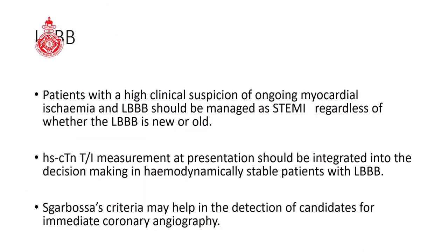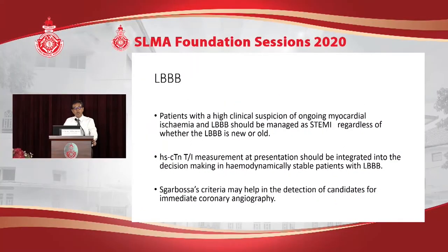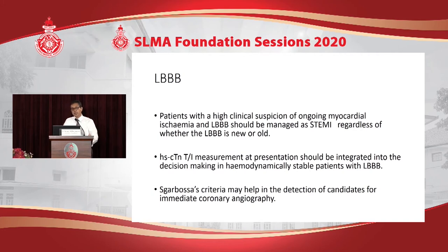A confusing situation occurs when chest pain presents with left bundle branch block. In an ischemic patient with LBBB, the territory of ischemia is quite large, making these patients naturally sicker than typical ST elevation MI patients. Therefore, if a patient presents with hemodynamic compromise with left bundle branch block — regardless of whether it is new or old — you should treat it as acute ST elevation MI. If the LBBB patient presents with chest pain and is hemodynamically stable, you can take time to obtain troponins before deciding treatment.